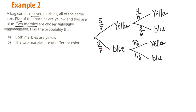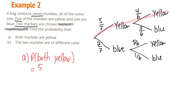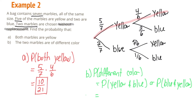Part a: the probability that both marbles are yellow happens only on the yellow-and-yellow branch, so we multiply along that branch: 5/7 × 4/6, which simplifies to 10/21. Part b: the probability of two marbles of different color covers yellow-blue or blue-yellow, so we add those two branches together, and that also gives 10/21.